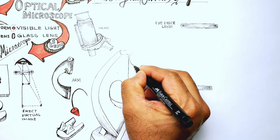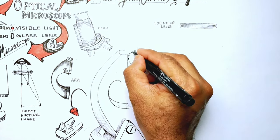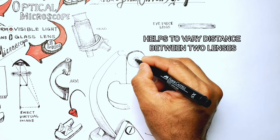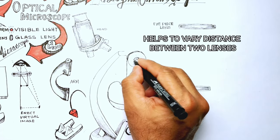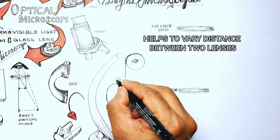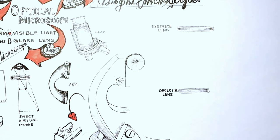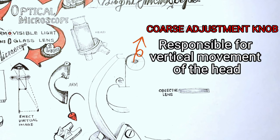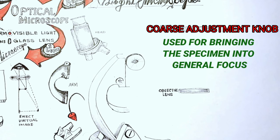There are two adjustment knobs located on the arm of the microscope. They are built on the same axis that allow the tubes to slide into one another, varying the distance between the lens and to bring the specimen into focus. The coarse adjustment knob located at the top of the arm moves the stage up and down. That produces a large vertical movement of the stage. This movement will help in bringing the specimen into general focus.